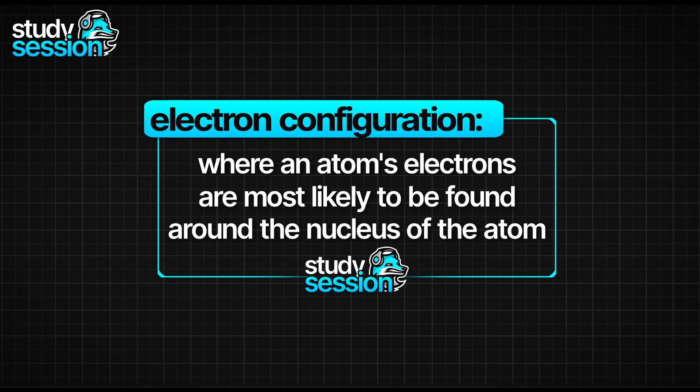When finding the electron configuration of an atom, we are being asked where does this atom place its electrons, i.e. what shells and orbitals are its electrons most likely to be found in.